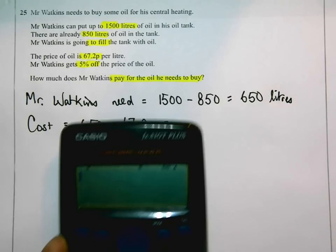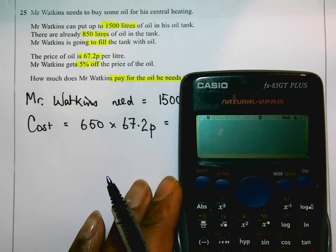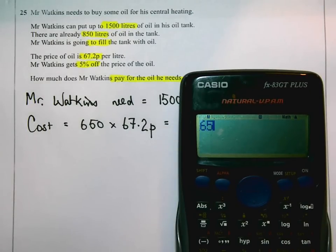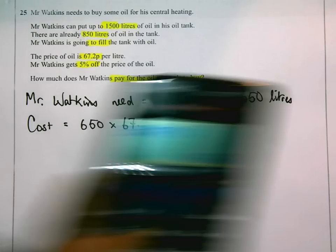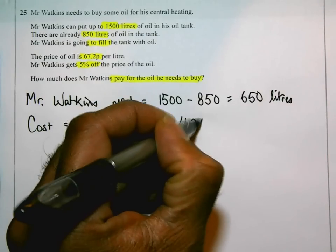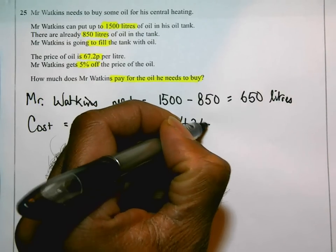Let's see, 650 times 67.2 equals... Ok, so that's 43,680. 43,680 pence.